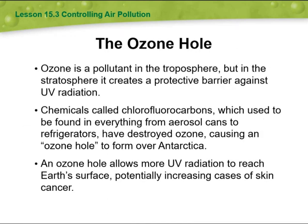Back to the ozone hole. Ozone is a pollutant in the troposphere, but in the stratosphere it creates a protective barrier against UV radiation. Chemicals called chlorofluorocarbons, which used to be found in everything from aerosol cans to refrigerators, have destroyed ozone, causing an ozone hole to form over Antarctica. An ozone hole allows more UV radiation to reach Earth's surface, potentially increasing cases of skin cancer.